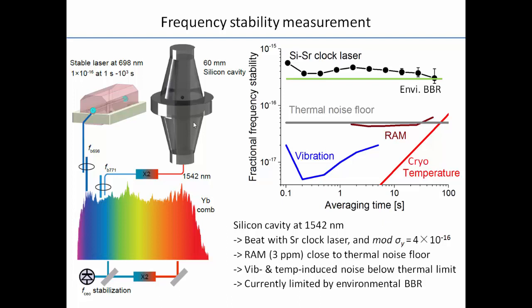In the experiment, we use a single-frequency laser at 1542 nanometers locked to the 60 mm cavity cooled to 4 Kelvin. We double it to 771 nm and beat against our 698 nm stabilized laser using a frequency comb. The current stability result is 10⁻¹⁶. We also investigated other noise sources: the residual amplitude modulation is currently 3 ppm, and the RAM-induced frequency noise is 5×10⁻¹⁷ — not ideal, so more optimization work is needed.